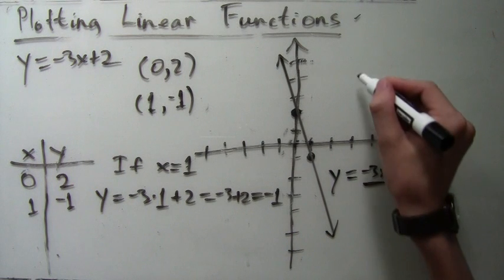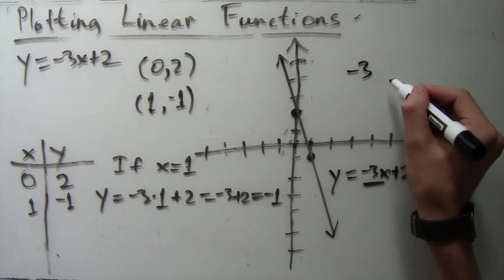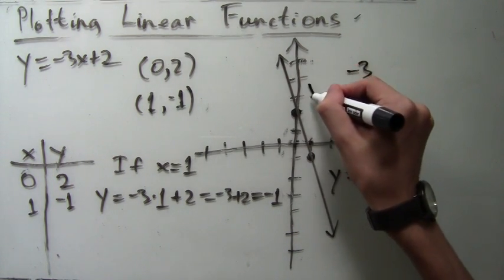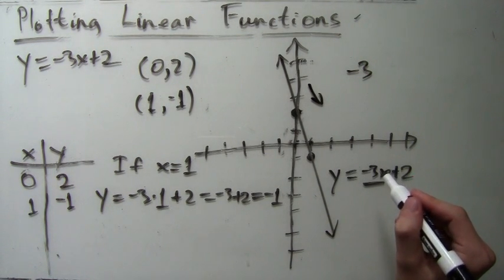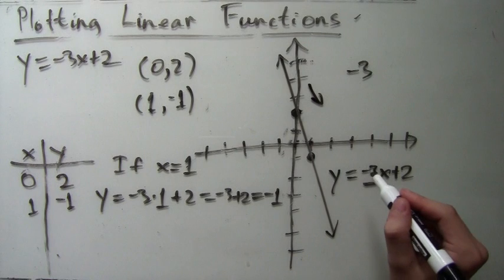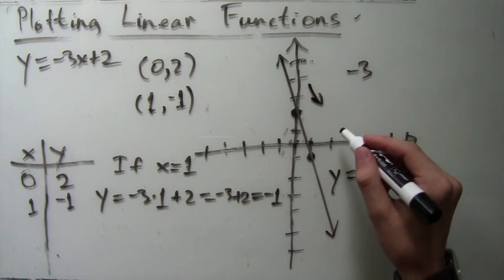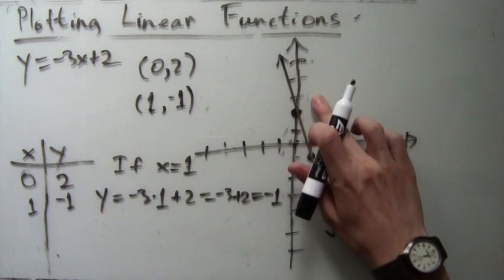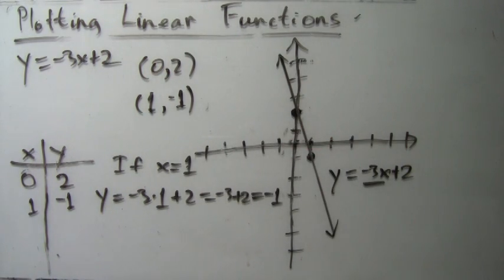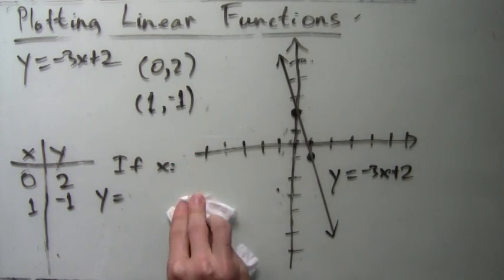Now notice, this line slopes down. This is because of the negative coefficient in front of the x. I'll explain more clearly with another example of plotting a linear function, but this other function will face a different direction. Now I'll clean up a little bit, but I will leave the plot of y=-3x+2 so that we can compare it to the next example.